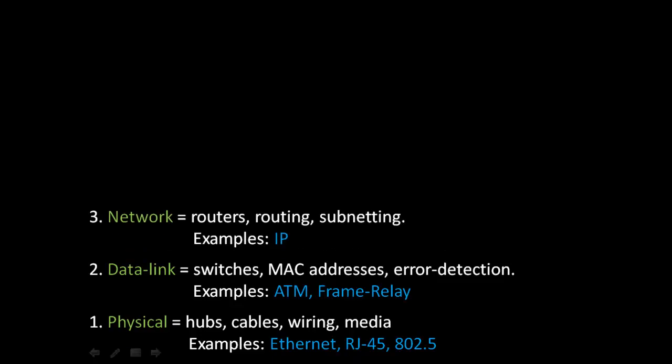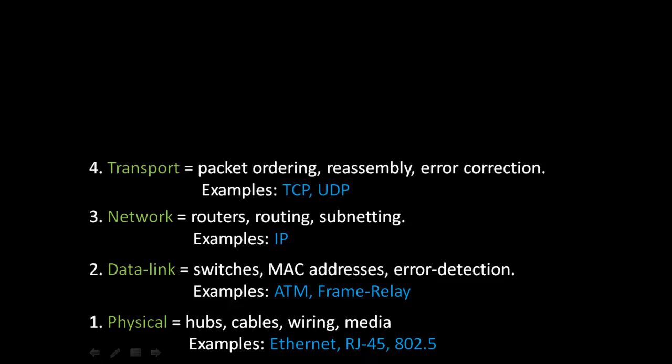The next layer up is the network layer. At this third layer, routers, routing, and subnetting take place. Examples would be the IP protocol. The fourth layer is the transport layer. Here, packet ordering, reassembly, and error correction after error detection take place. Examples at the transport layer would be TCP and UDP.